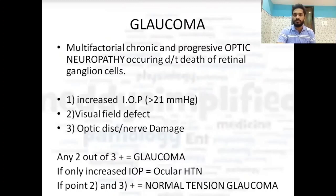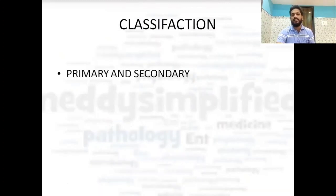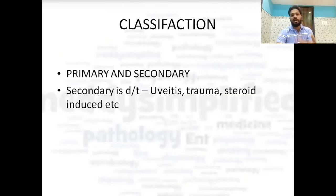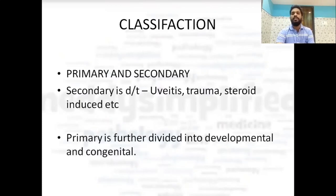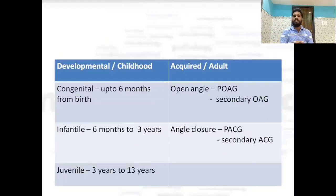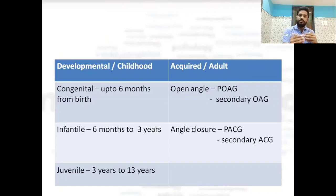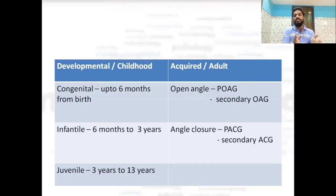Classification of glaucoma: primary and secondary. Secondary is due to other causes like uveitis, trauma, steroid-induced, etc. Primary is divided into developmental (childhood) glaucoma and acquired (adult) glaucoma. Childhood glaucoma is divided into congenital (birth to 6 months), infantile (6 months to 3 years), and juvenile (3 to 13 years). Adult glaucoma is divided into open angle and angle closure, each further divided into primary and secondary types.